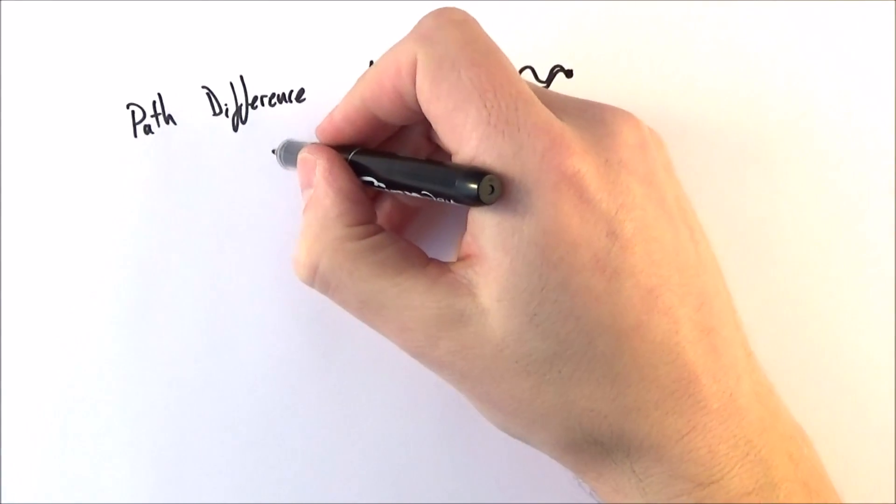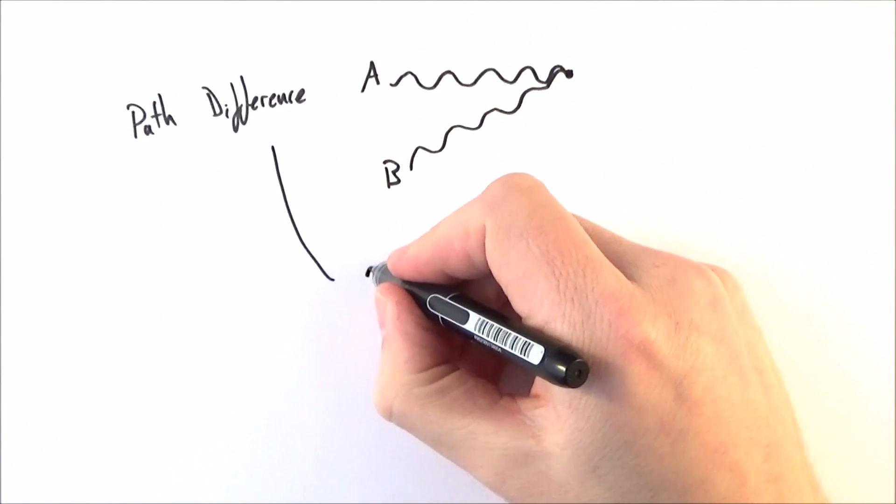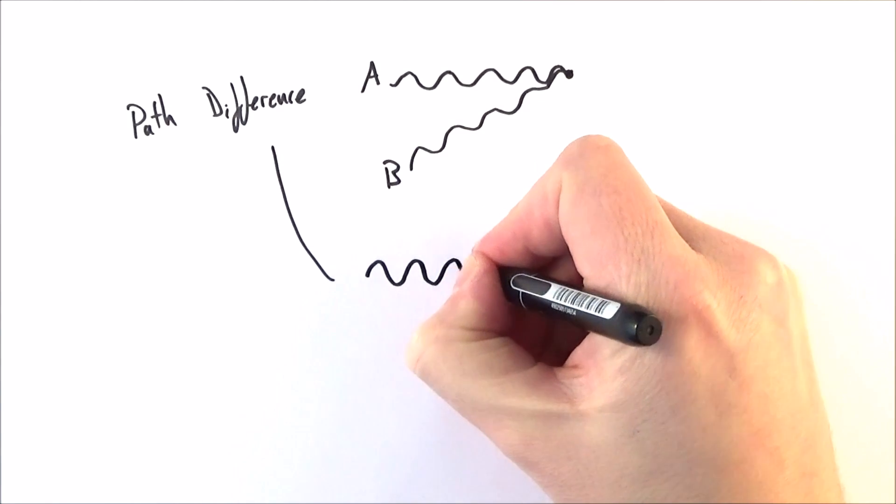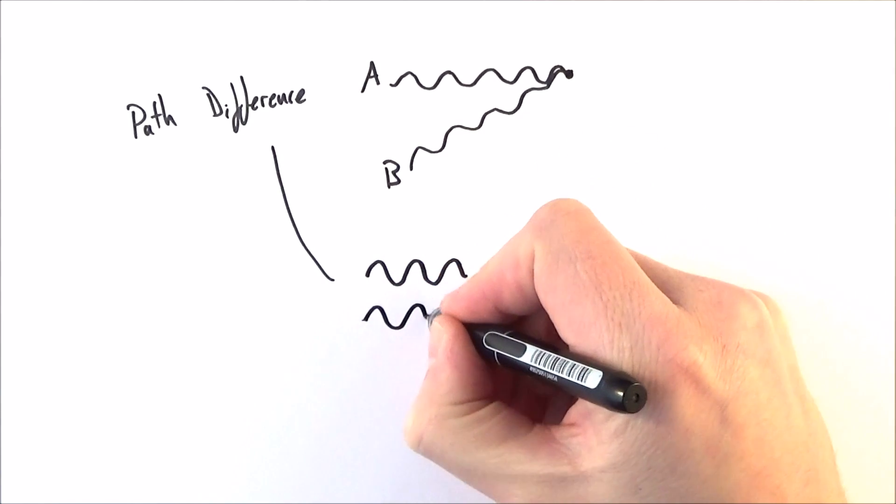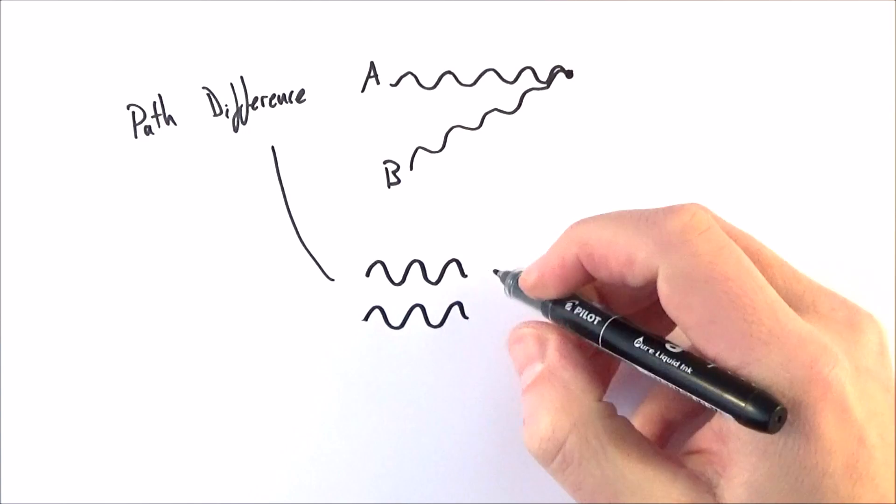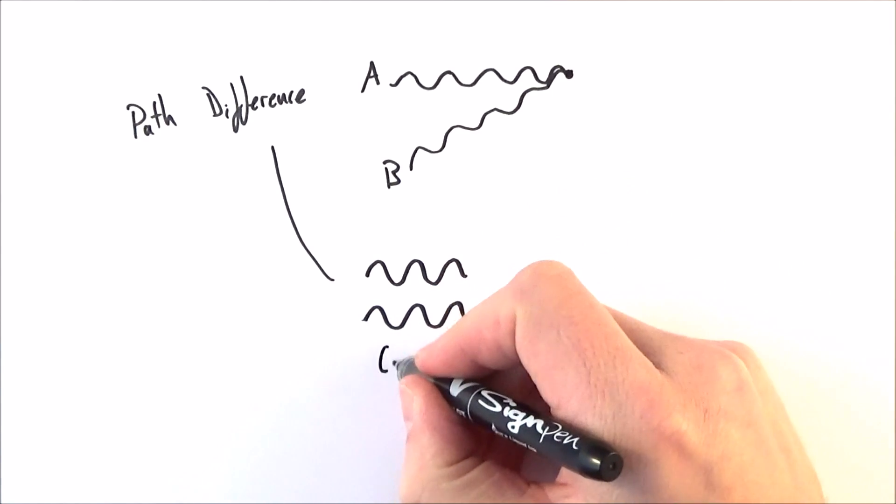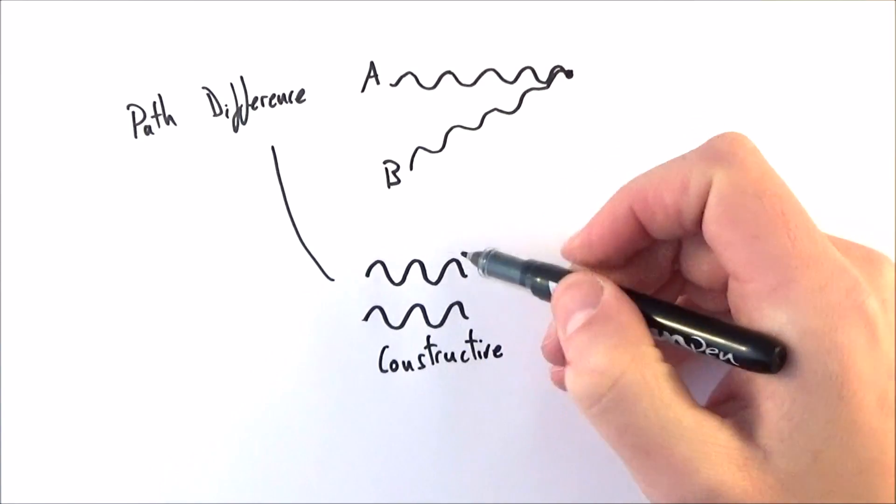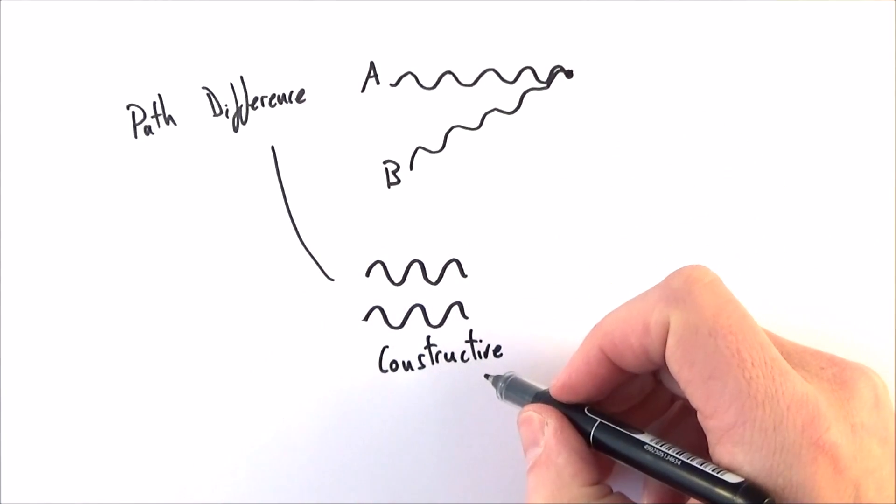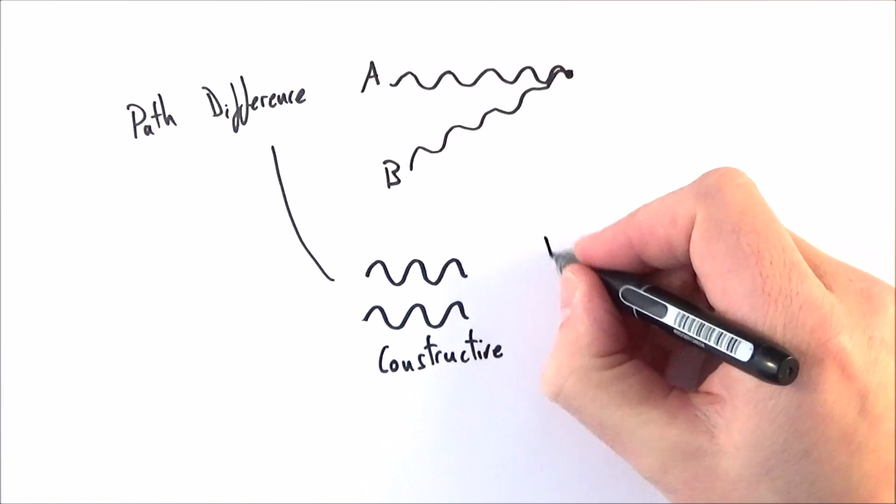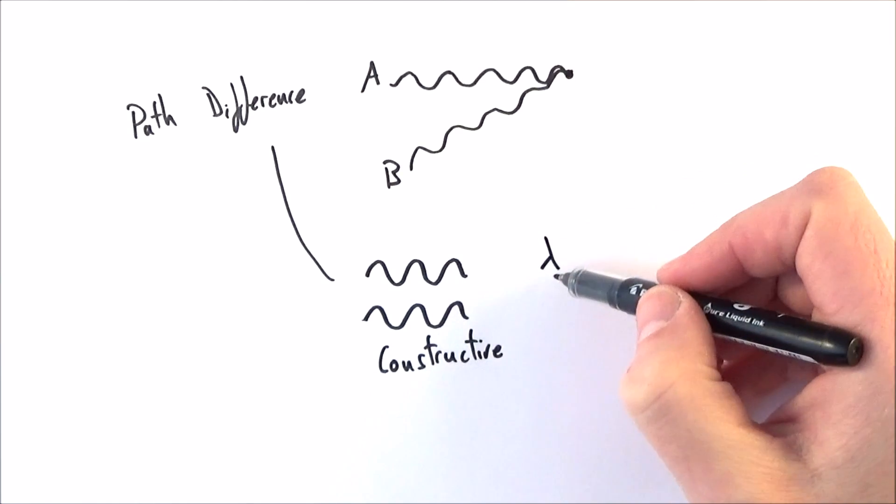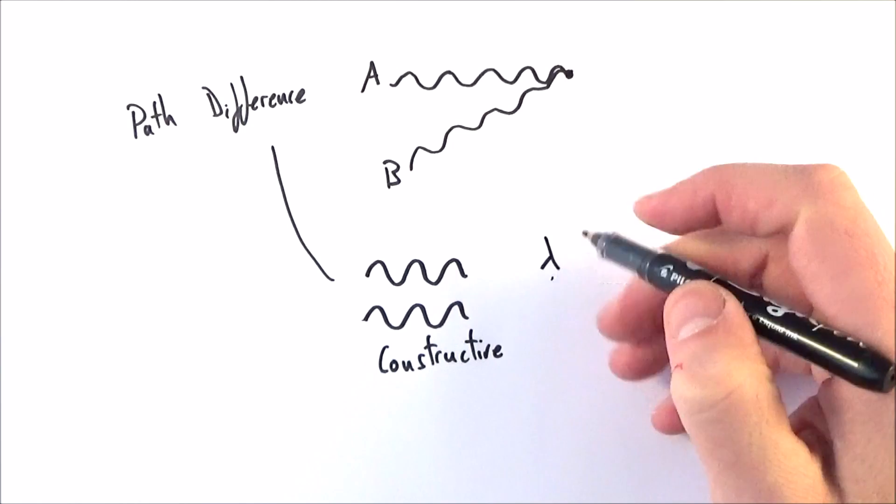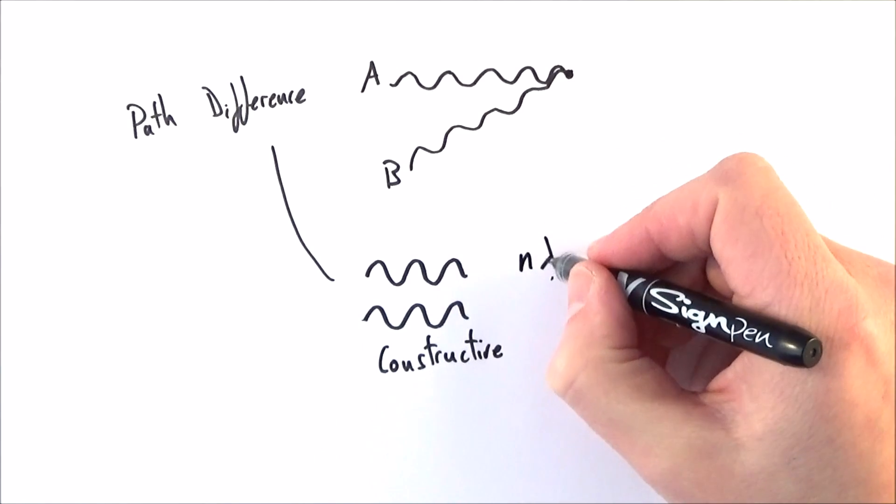The important thing about path difference is that if you have waves that have a path difference of a multiple of the wavelength, what we get is constructive interference, because the peaks coincide with one another. So we get constructive interference when you have the difference between the paths equal to some multiple of the wavelength. And we can call this n lambda.